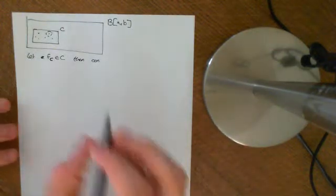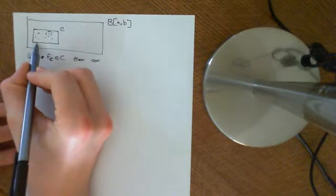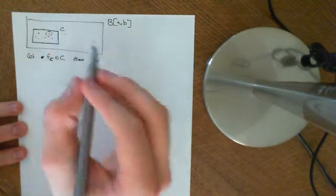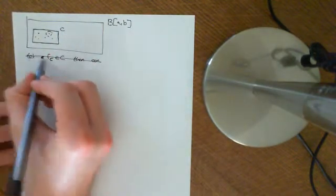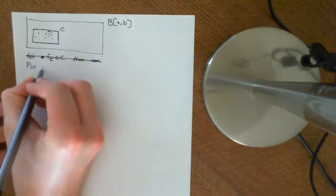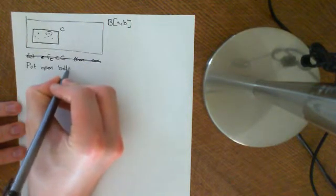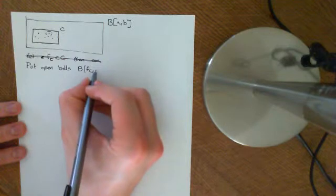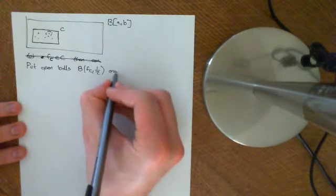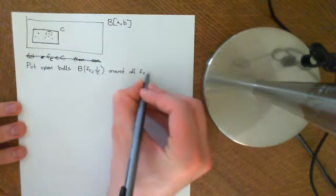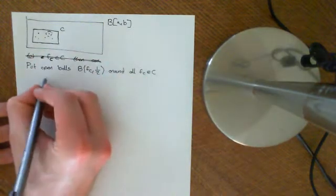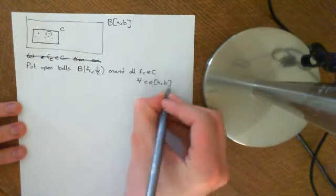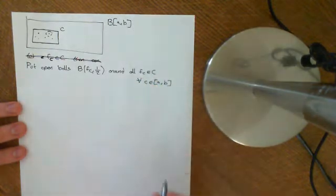Welcome to part 2 of this video. What we're saying now is we have this uncountably infinite subset of B(A,B), which is the subset C. Now, we'll put open balls of radius one-half around all f_c, for all little c in the big set C. So we let little c vary over A,B and then we get all of these possible functions.